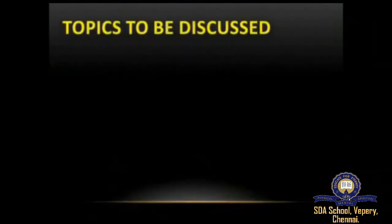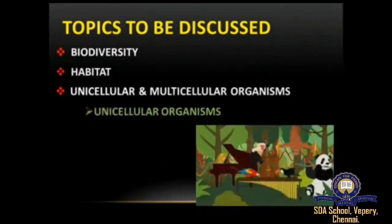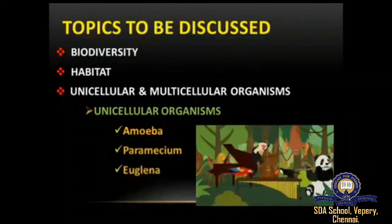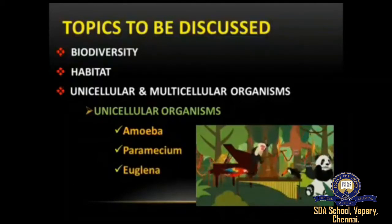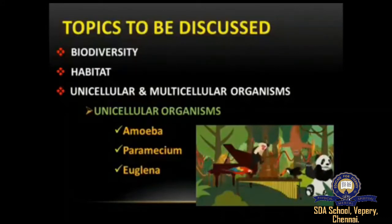In today's class we'll be looking into the fifth unit — the living world of animals. We'll be looking into what is biodiversity, what is habitat, and then we'll be moving on to unicellular and multicellular organisms. In today's class we'll be learning only about unicellular organisms — specifically amoeba, paramecium, and euglena.